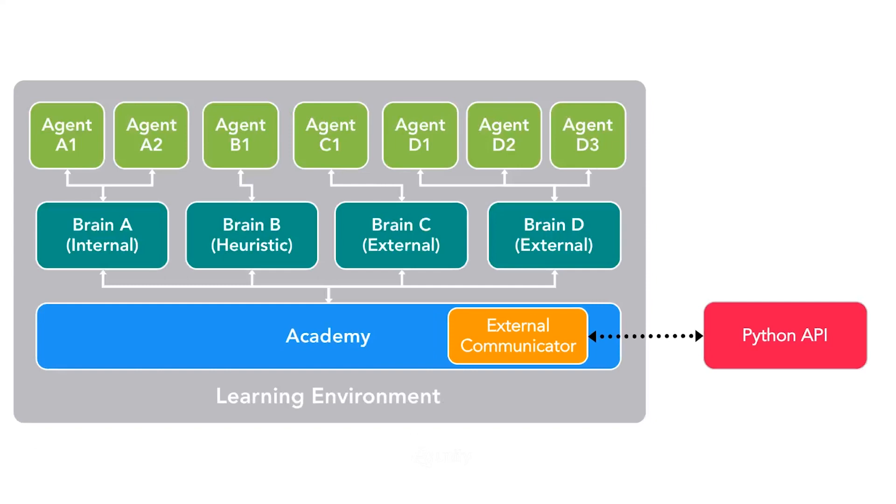We can make this more complex, as seen in this diagram here, where we now have four different kinds of brains, each controlling multiple different agents. You can imagine an African Sahara, where you have different kinds of animals, for example, elephants, lions, and zebras.